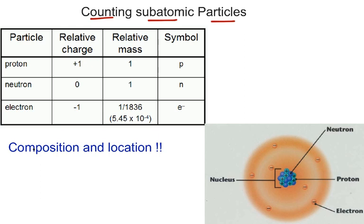Composition. The atom is made up of protons, neutrons, and electrons. The protons and neutrons are located in the nucleus, in the center of the atom. Now, the nucleus right here is not drawn to scale. The nucleus is very, very small in comparison to the rest of the atom, but it's just drawn like this for emphasis.